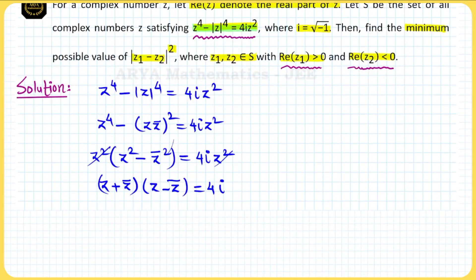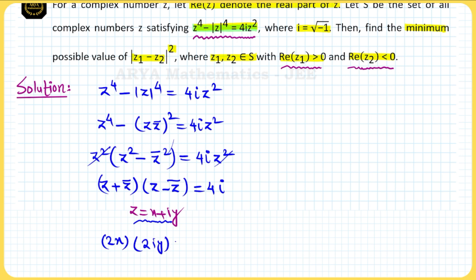In the next step, substituting z = x + iy to identify the type of locus: z + z̄ = 2x, and z − z̄ = 2iy. So we get (2x)(2iy) = 4i, which simplifies to 4i·xy = 4i. Cancelling 4i, we finally get xy = 1.